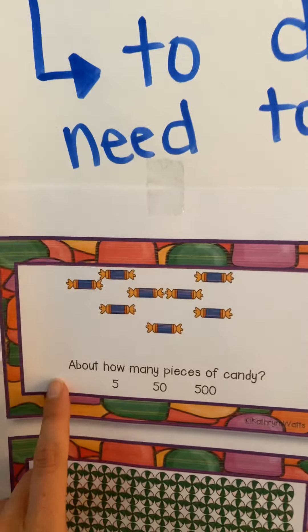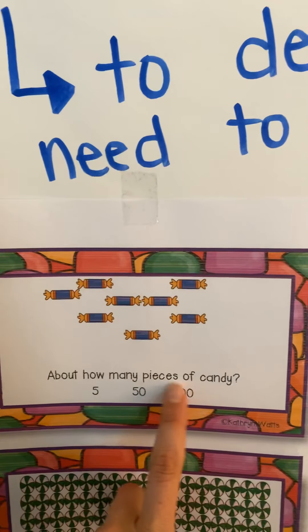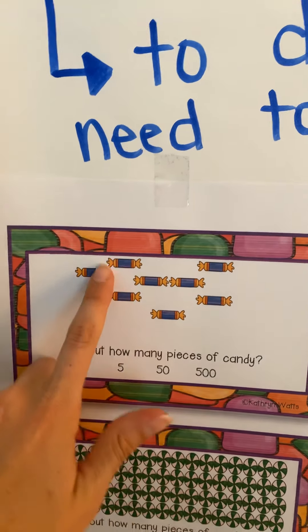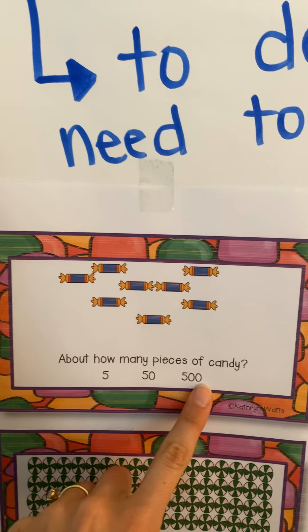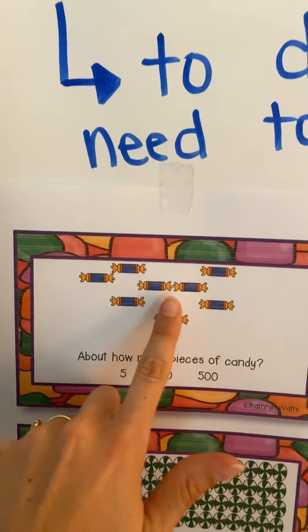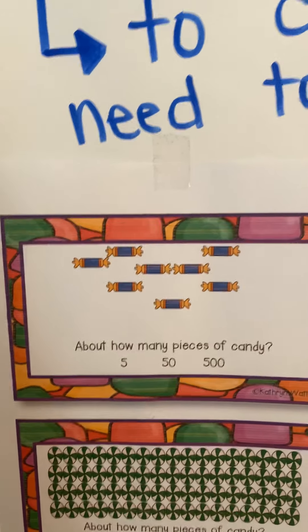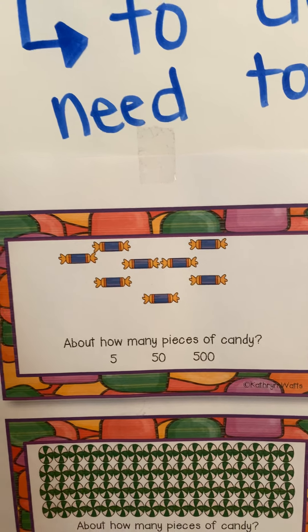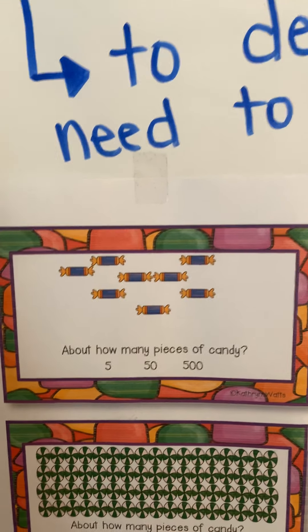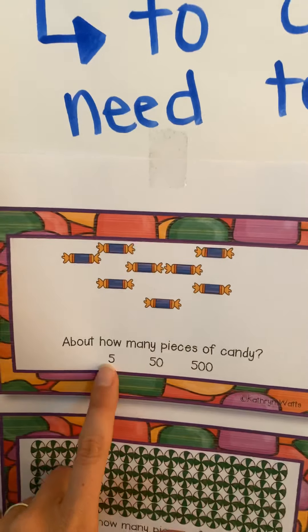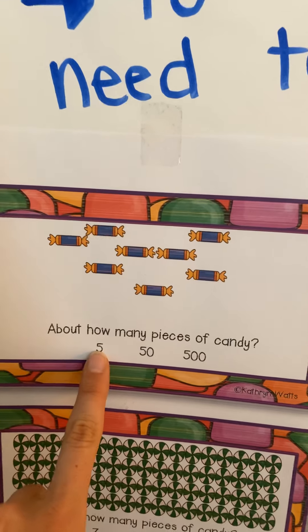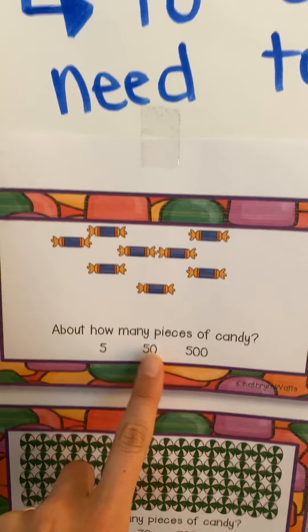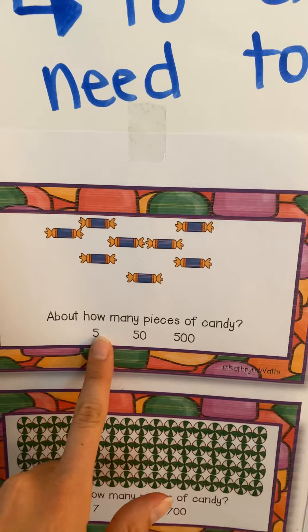Here is the first one. About how many pieces of candy are here? Is it about five, fifty, or five hundred? What do you think this amount is closest to? Five would be the correct answer. It is closer to the number five than it is to fifty. So that makes the most sense.